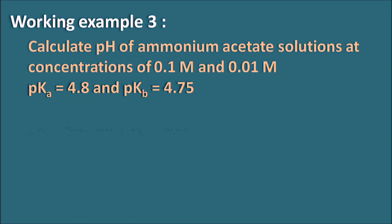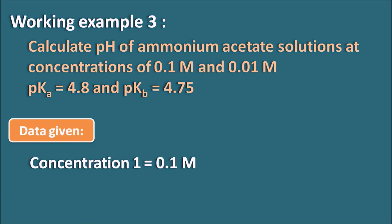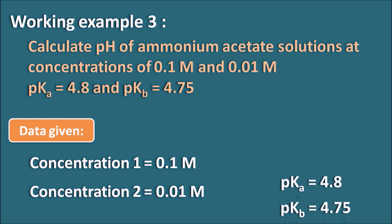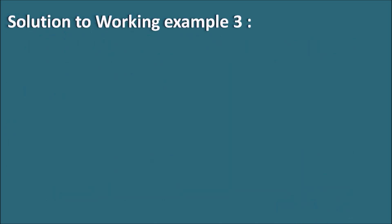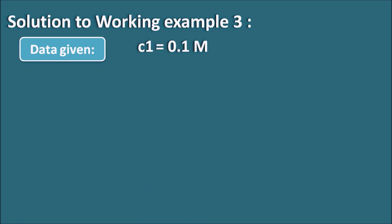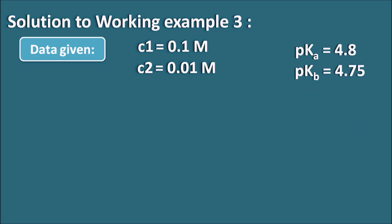Working example 3: Calculate the pH of ammonium acetate solution at concentrations of 0.1 M and 0.01 M. Given: pK_a of acetic acid = 4.8, pK_b of ammonia = 4.75. Two concentrations are given — C1 = 0.1 M and C2 = 0.01 M — and we must calculate the pH at both.